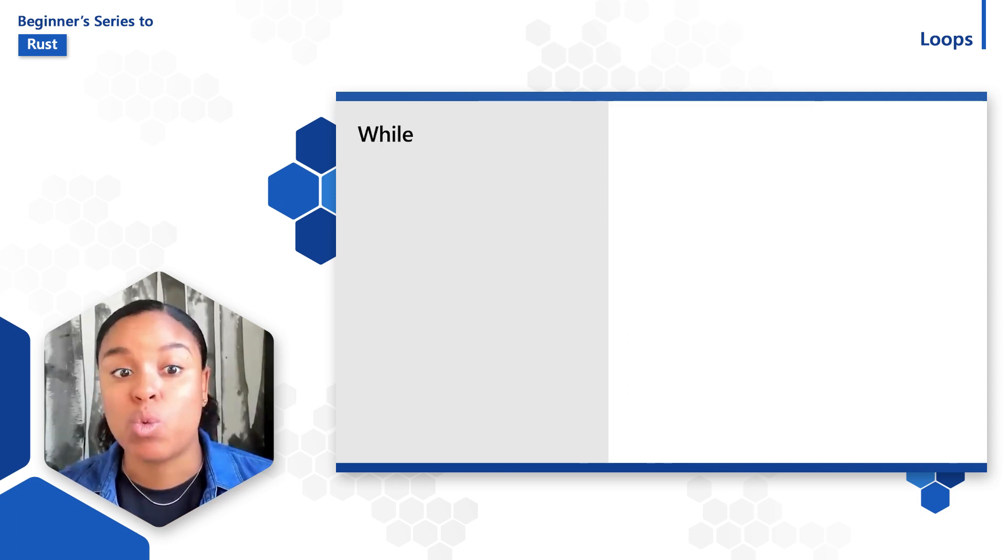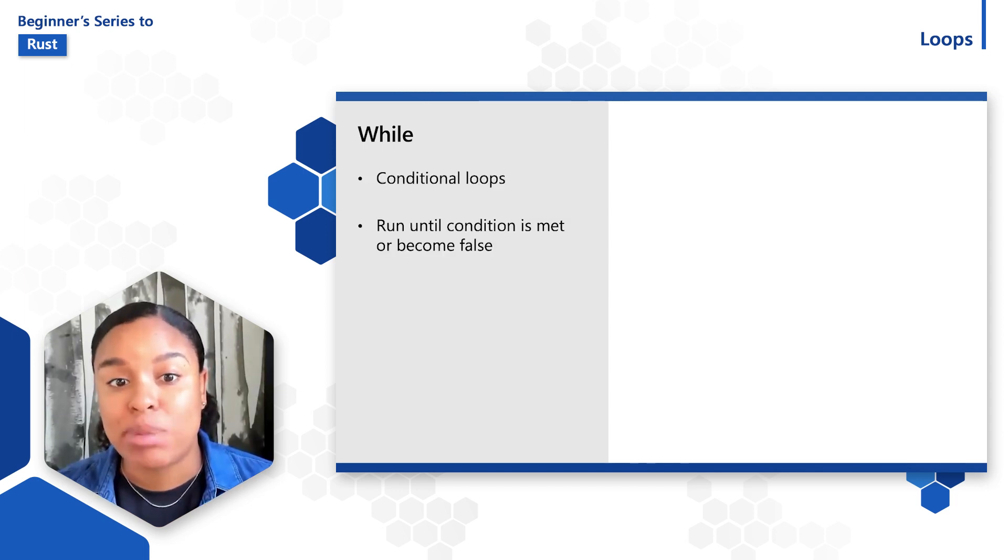Next, let's talk about while loops. While loops are referred to as conditional loops. While the condition they specify is true, the loop will run continuously. When the condition is met or becomes false, the program exits the loop, stops, and continues with the program.